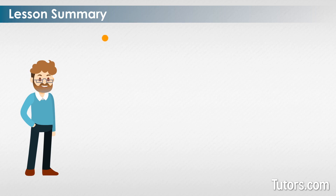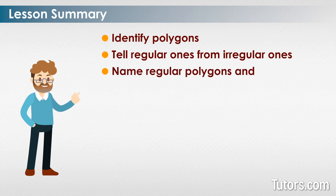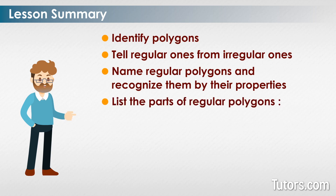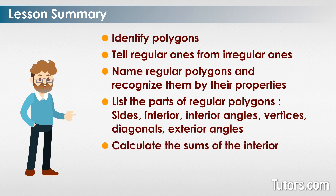In summary, you now have all the tools you need to: identify polygons and tell regular ones from irregular ones; name regular polygons and recognize them by their properties; list the parts of regular polygons — sides, interior, exterior, interior angles, exterior angles, vertices, and diagonals; and calculate the sums of the interior angles of polygons.